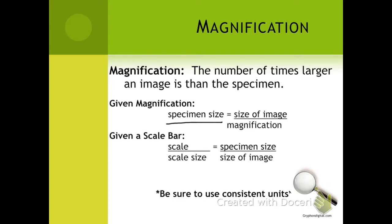The other equation is for a situation where you are given a scale bar. Scale refers to what the bar actually represents, and scale size refers to the actual length of that bar — so you take a ruler and actually measure that bar. Specimen size is going to be the actual size of the specimen, and size of image is the size that you see the image as.